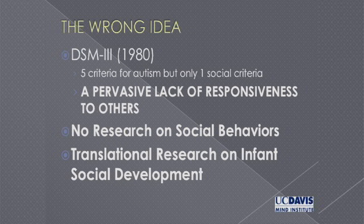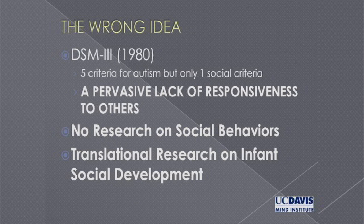Moreover, when we first took a stab at having a diagnostic system, in my opinion we made a terrible mistake. In 1980, we described autism singularly in terms of the social deficit as a pervasive lack of responsiveness to others — that's where the larger rubric of pervasive developmental disorder comes from. A pervasive lack of relatedness or responsiveness to others is such a broad brush that it almost defines no child whatsoever, because any child with autism, if you really know them, you can see that they're responsive. It threw people off for a long time.